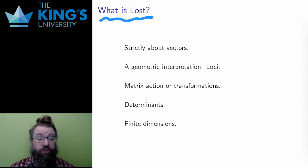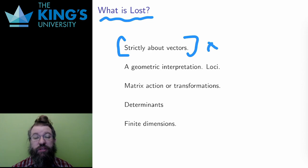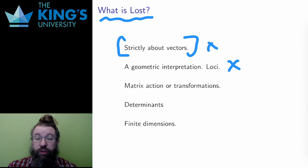abstract vector spaces are no longer strictly about vectors. Losing explicit vectors means losing the geometric interpretation, for the most part. The elements of an abstract vector space may no longer have the geometric meaning of vectors. In particular, the whole structure of loci may be gone, or at least radically changed.